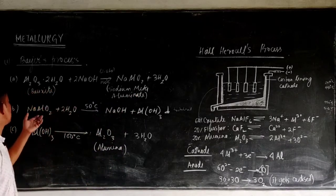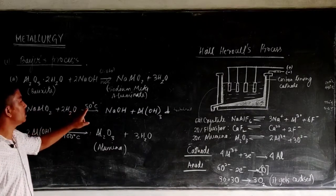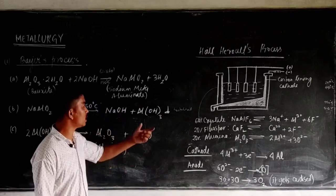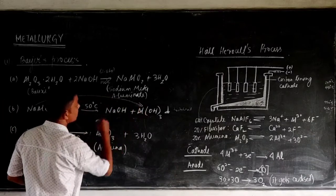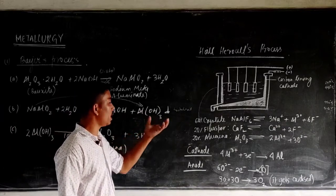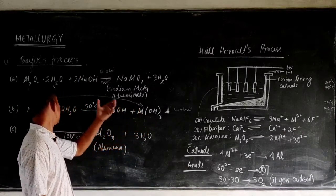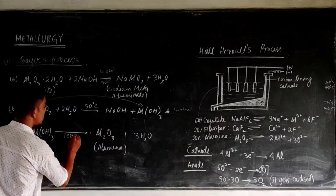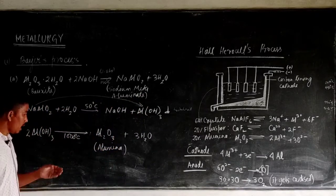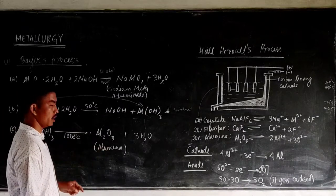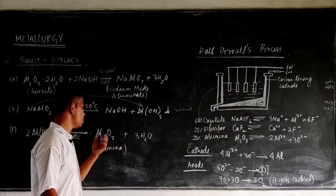Once sodium meta-aluminate is obtained, the next step in the Bayer's process is to dilute it with water and heat again at 50°C to obtain sodium hydroxide and aluminium hydroxide — Al(OH)₃. Here the sodium meta-aluminate is hydrolyzed and aluminium hydroxide is obtained as a precipitate. This precipitate is washed, dried, and then heated at 1000°C, and finally we obtain aluminium oxide (Al₂O₃).